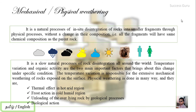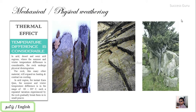Temperature variation is responsible for the extensive mechanical weathering of the rock exposed on the surface. There are different temperatures in day or night and different seasons — summer is very hot and winter is very cold — so temperature variation makes it very easy to disintegrate rocks. This is physical weathering. The first group is thermal effect in hot and arid regions. Second is frost action in cold and humid regions. Third is unloading of overlying rocks by geological processes. Fourth is biological action.